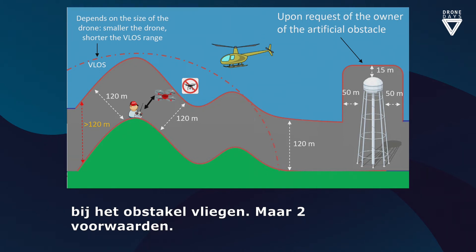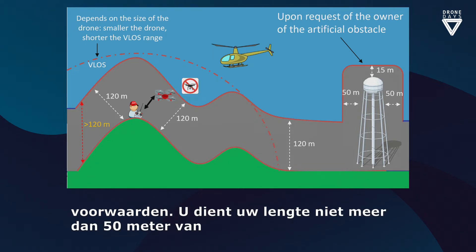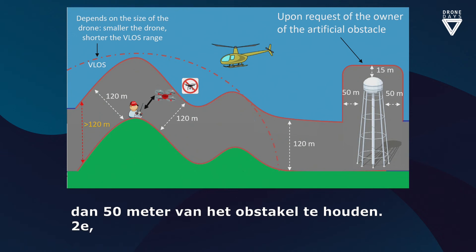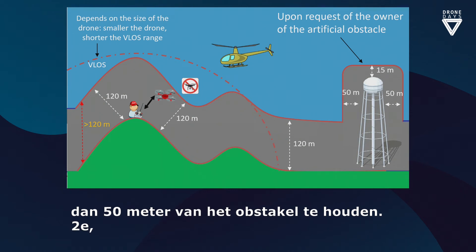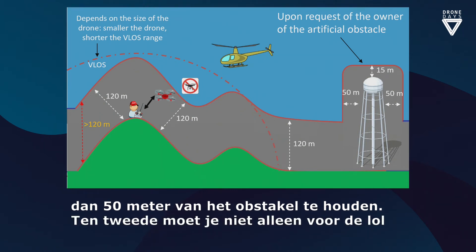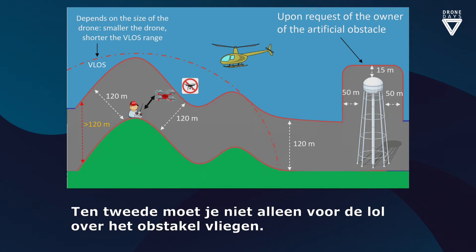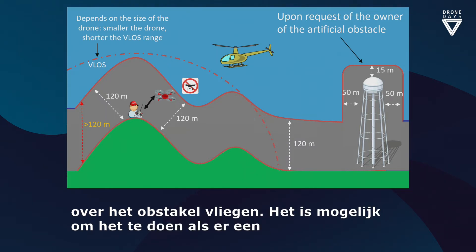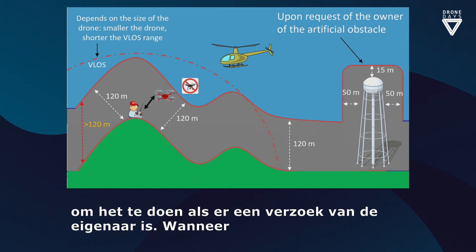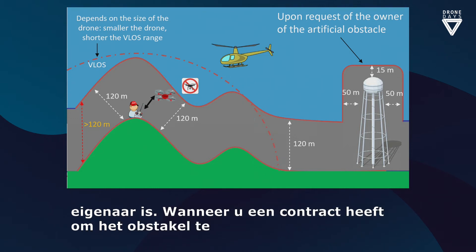There are two conditions for flying near tall obstacles. First, you need to keep your height no more than 50 meters above the obstacle, and the lateral distance must also be within 50 meters from the obstacle. Second, you should not fly over the obstacle just for fun — it is allowed in the open category only if there is an explicit request from the owner of the obstacle, for example if you have a contract to conduct an inspection.